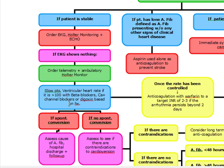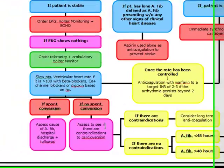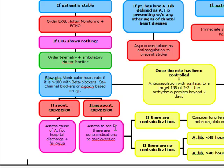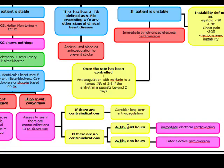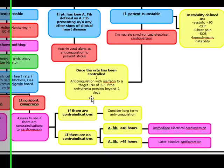If the patient has spontaneous conversion with one of these drugs, we're going to assess the cause of the AFib and discharge and follow up. But if they're still over 100, we want to first assess for any contraindications to cardioversion. If there are no contraindications and the AFib is less than 48 hours, we do immediate electrical cardioversion. If the AFib has been over 48 hours, we do an elective cardioversion. Once the rate has been controlled, we have to anticoagulate these patients with warfarin to a target INR of 2 to 3 if the arrhythmia persists beyond 2 days.